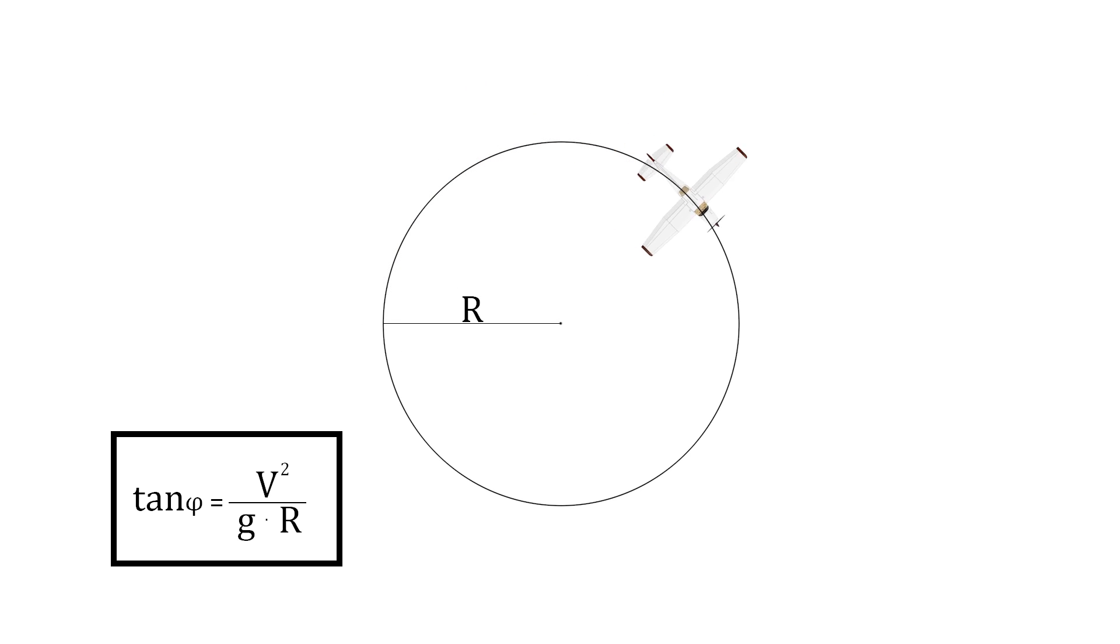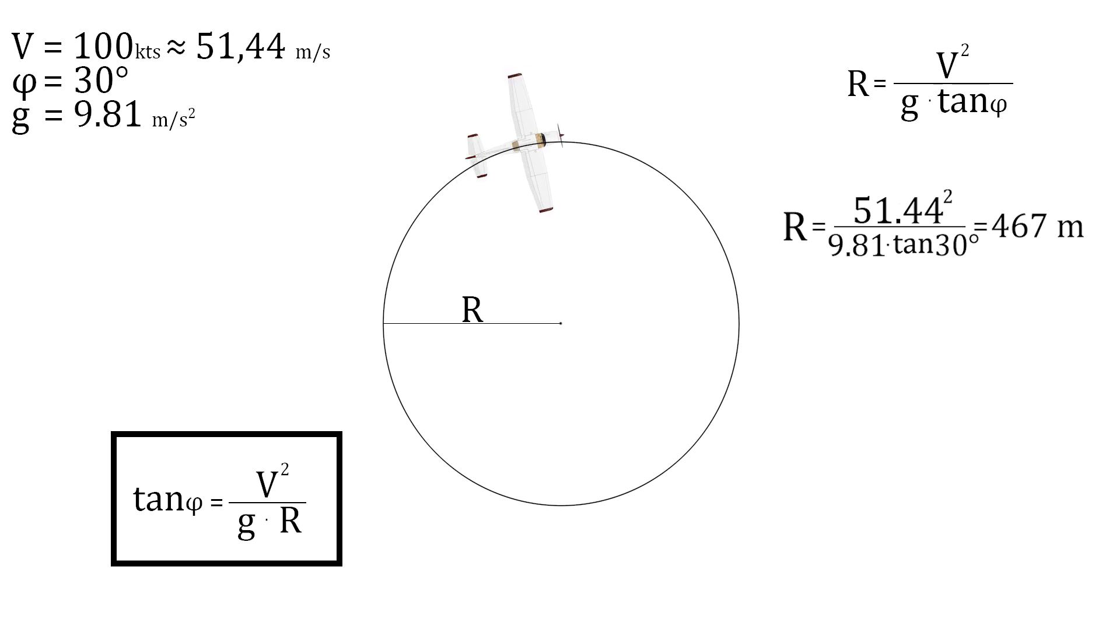Let's imagine an aircraft flying at a speed of 100 knots at a bank angle of 30 degrees. Using the formula below, we can write that radius is equal to V squared over G tangent phi, and if we put the numbers in, we get a radius of 467 meters.